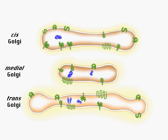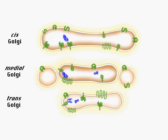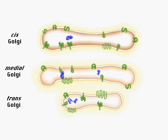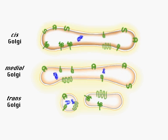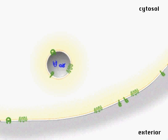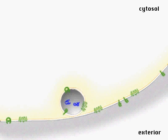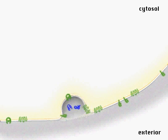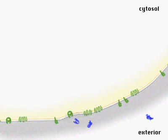Proteins destined for secretion after modification in the Golgi are transported from the trans Golgi to the plasma membrane. When the membranes fuse, the proteins are released into the extracellular space.